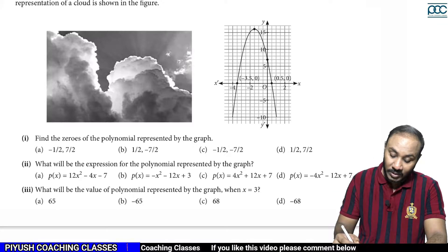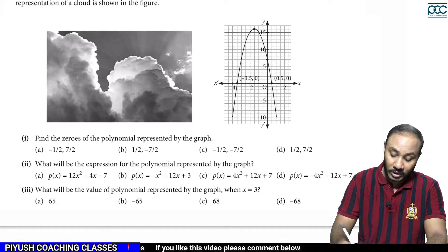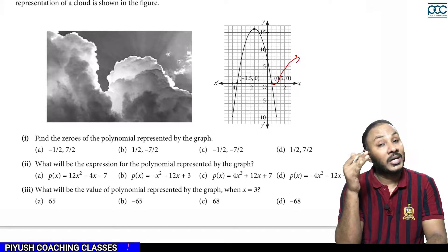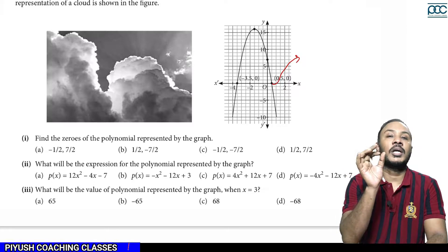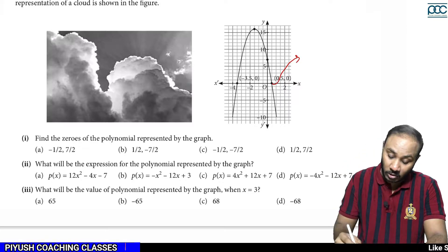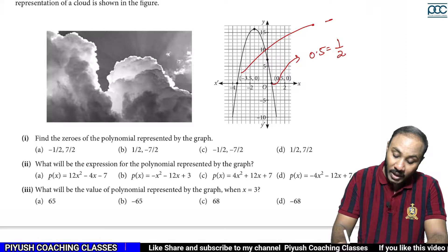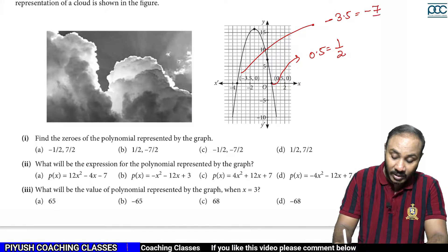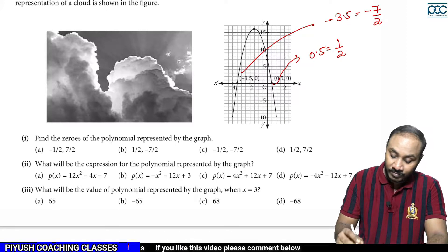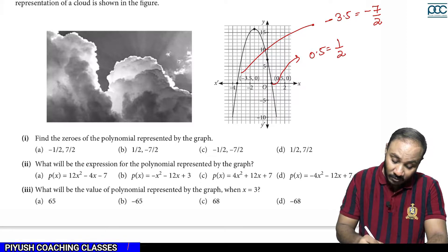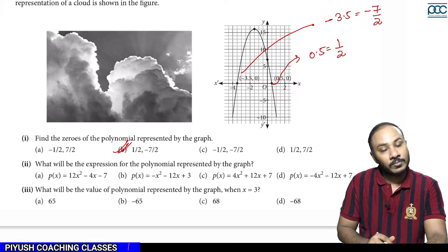Find the zeros of the polynomial represented. The zeros mean where your curve is cutting the x-axis. It is cutting at 0.5, meaning at half, and the second point is at minus 3.5, meaning minus 7 by 2. So these are the zeros: half and minus 7 by 2.